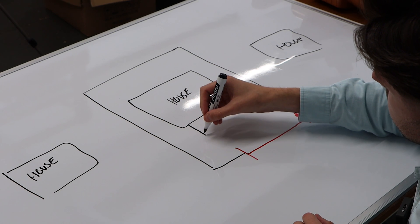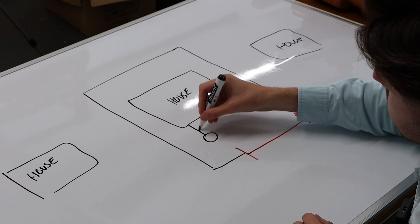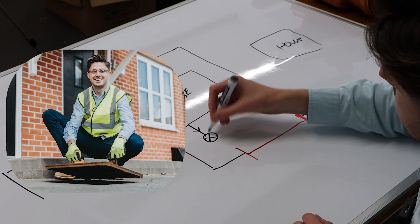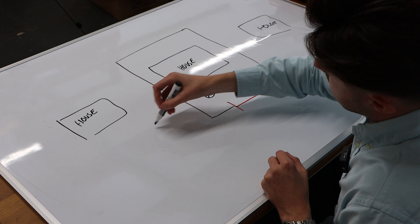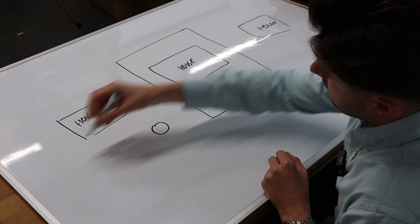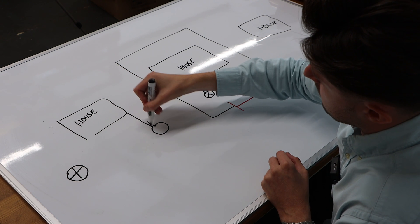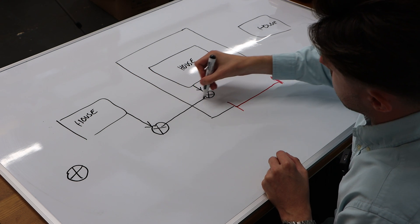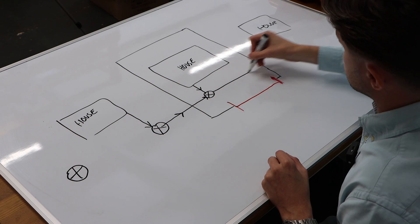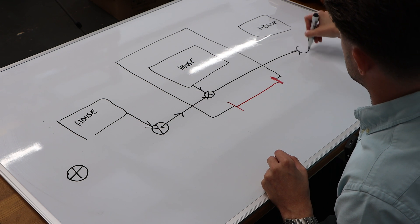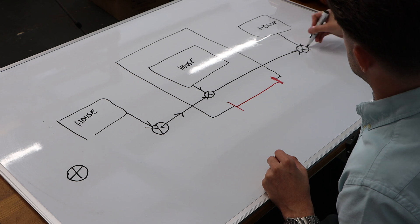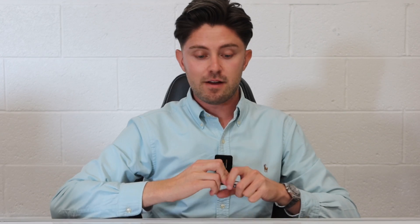So you could have your foul drainage coming out of the property into an inspection chamber or a manhole, but what you might also have and is very common on modern estates is you could potentially have neighboring properties draining through. Now that creates two problems for you.